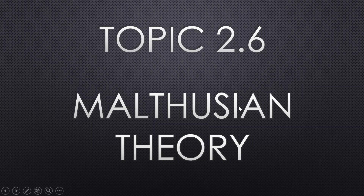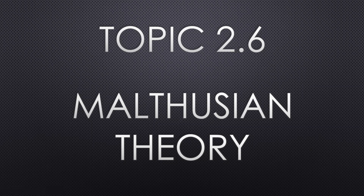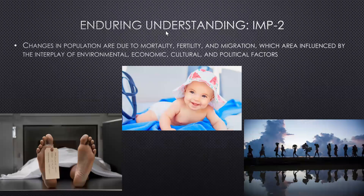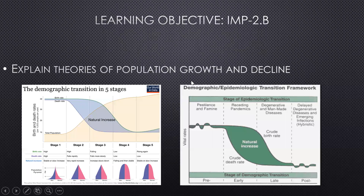Today we're covering topics 2.6 and 2.7, looking at the Malthusian theory. This goes along with the enduring understanding that changes in population are due to mortality, fertility, and migration, which are influenced by the interplay of environmental, economic, cultural, and political factors.